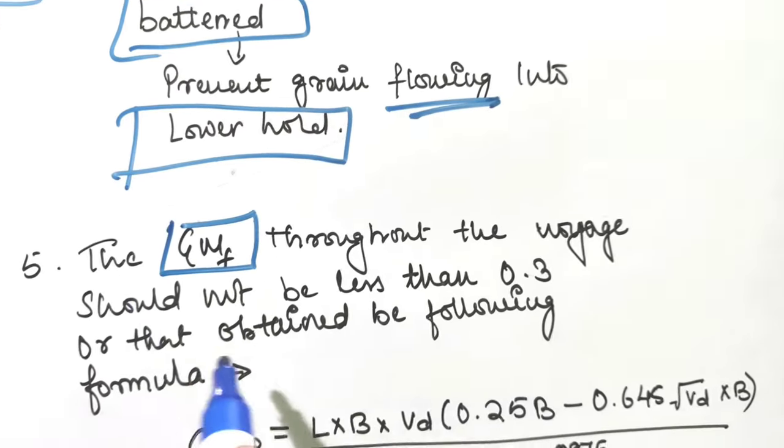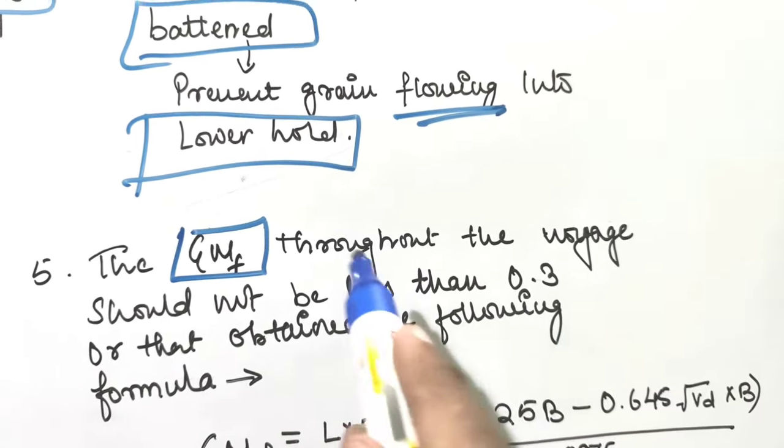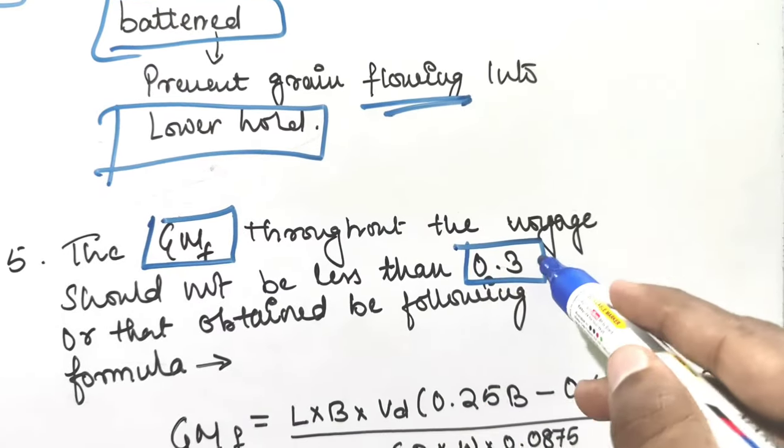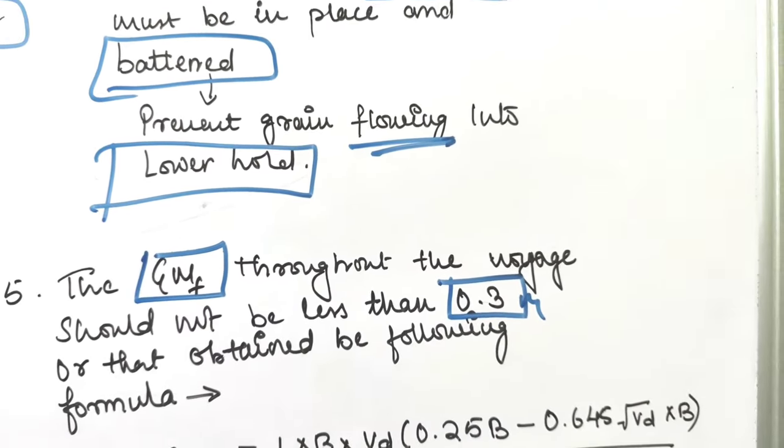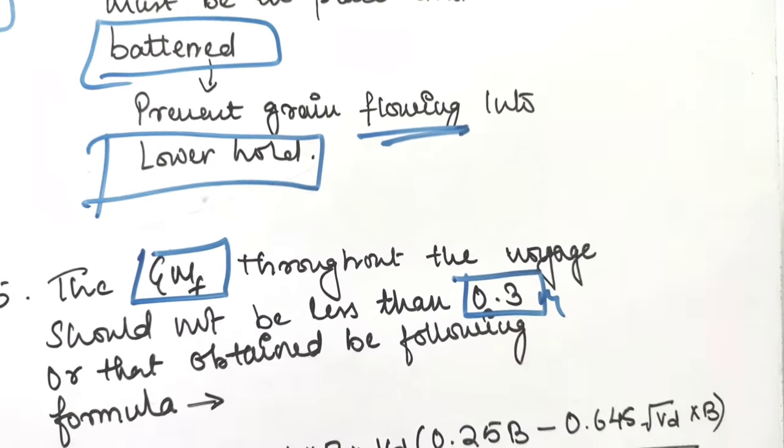Now the fifth one. The GM fluid throughout the voyage should not be less than 0.3 meters or that obtained by the following formula.